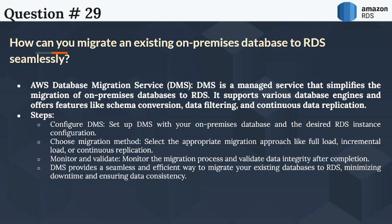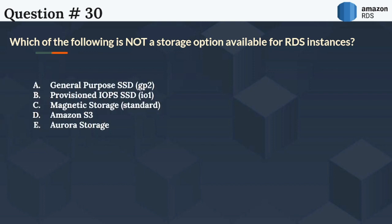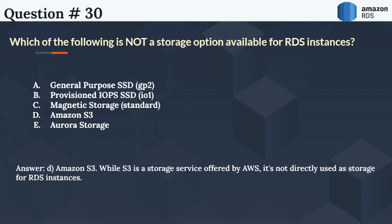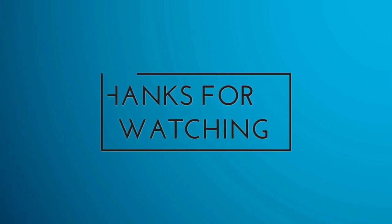The next question is: Which of the following is not a storage option available for RDS instances? A. General Purpose SSD (GP2), B. Provisioned IOPS SSD (IO1), C. Magnetic Storage Standard, D. Amazon S3, E. Aurora Storage. Answer: D. Amazon S3. While S3 is a storage service offered by AWS, it is not directly used as storage for RDS instances. If you have any question or doubt, feel free to ask in the comment section below. Thank you for watching, bye and have a nice day.